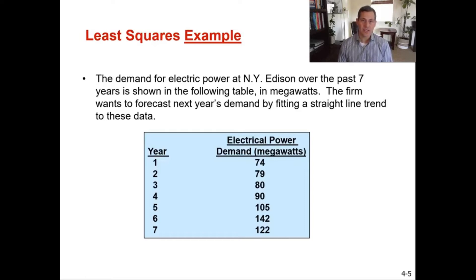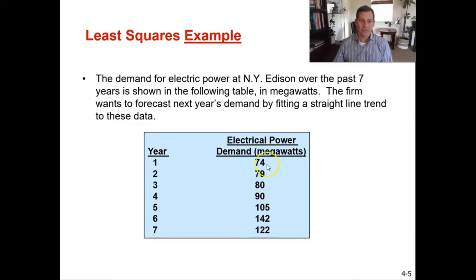Let's do an example. The demand for electric power at New York Edison over the past seven years is shown in megawatts. The firm wants to forecast next year's demand by fitting a straight line trend to this data. There are seven years of data and the electrical power demand goes from 74 to 79, 80, 90, 105 — for the most part that trend is definitely going up. There's a little bit of an outlier between years six and seven, which we'll keep in mind going forward.